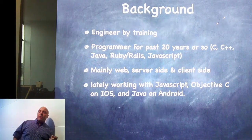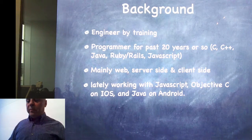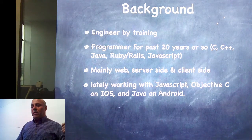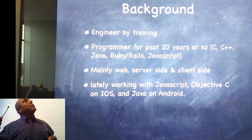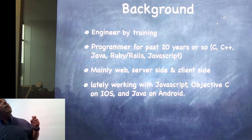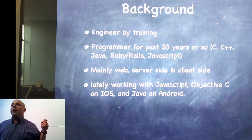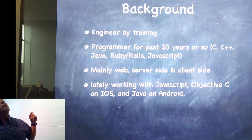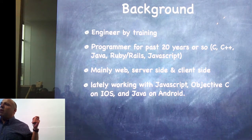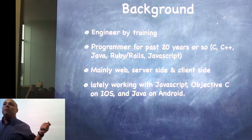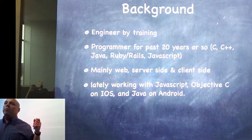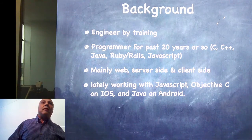A little bit of my background. I'm an engineer by training, and I've been a computer programmer for the past 20 years. These are some of the languages I've used in a production setting. The bulk of my experience is in Java — 10 years as a Java programmer — and Ruby on Rails since 2009, and JavaScript since 2010. I'm mainly a web developer. Server-side is my strong point.